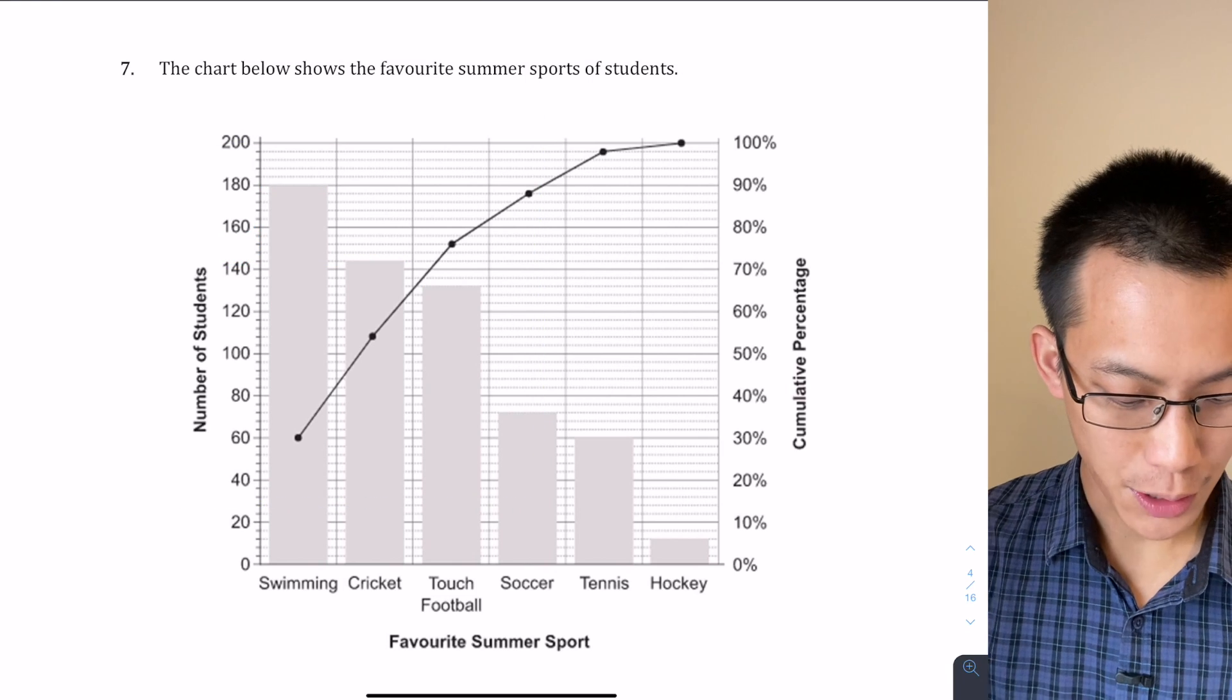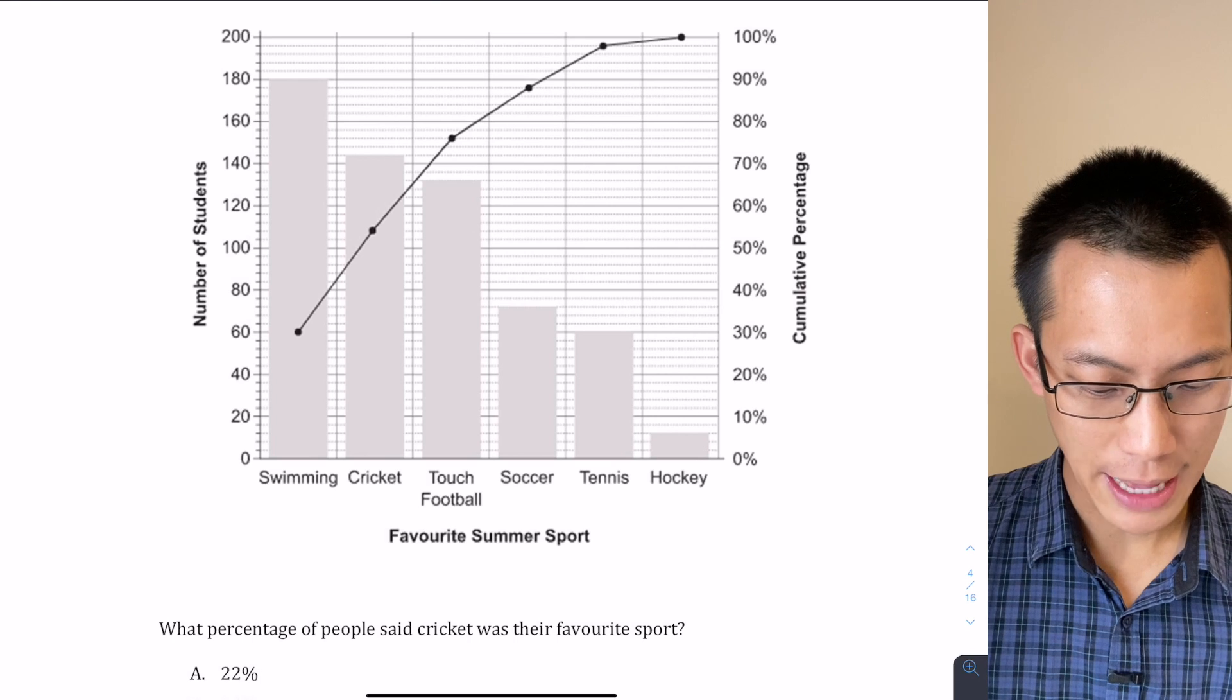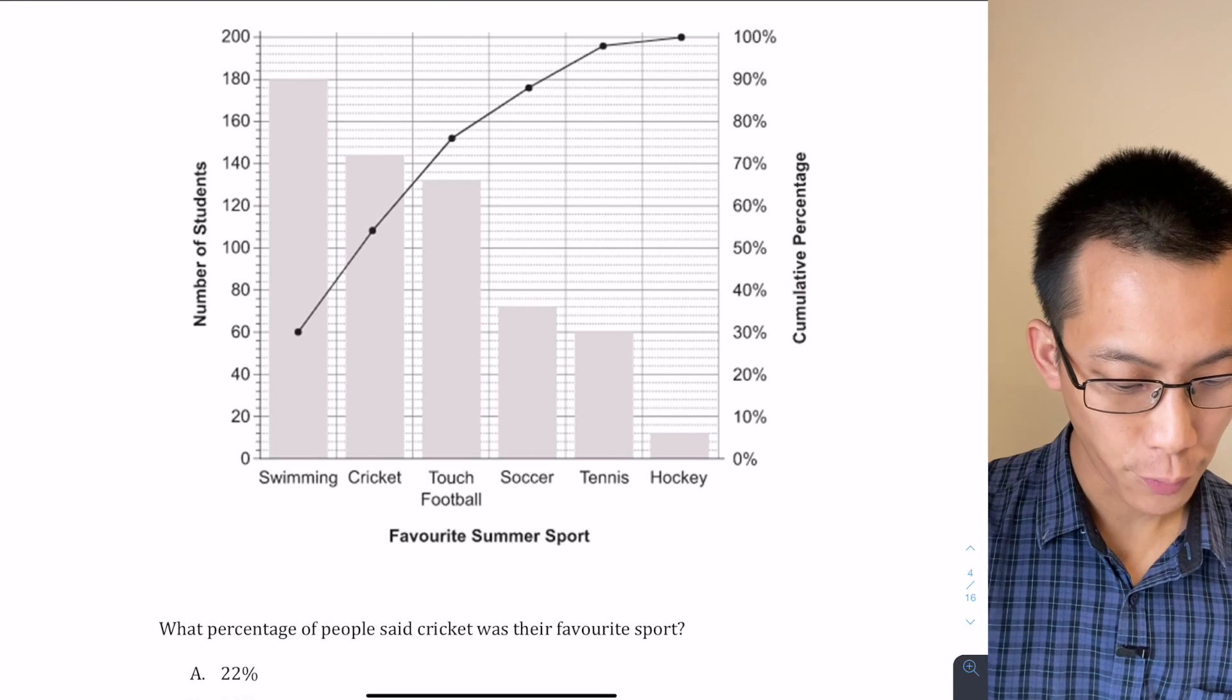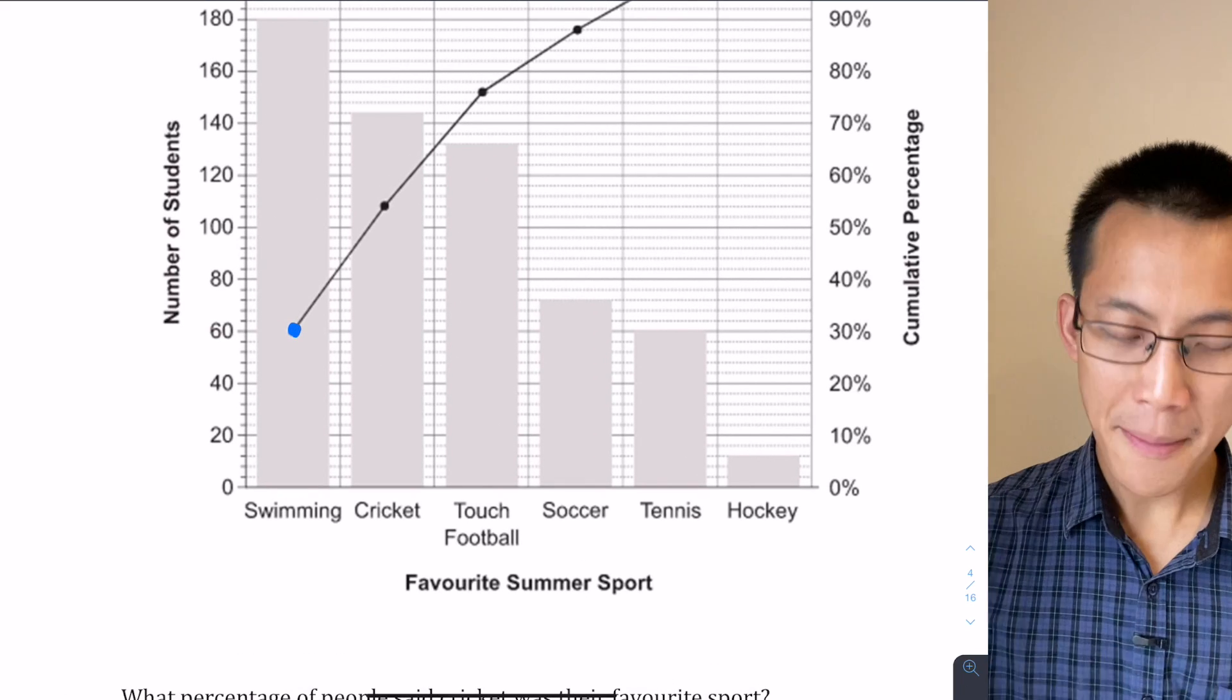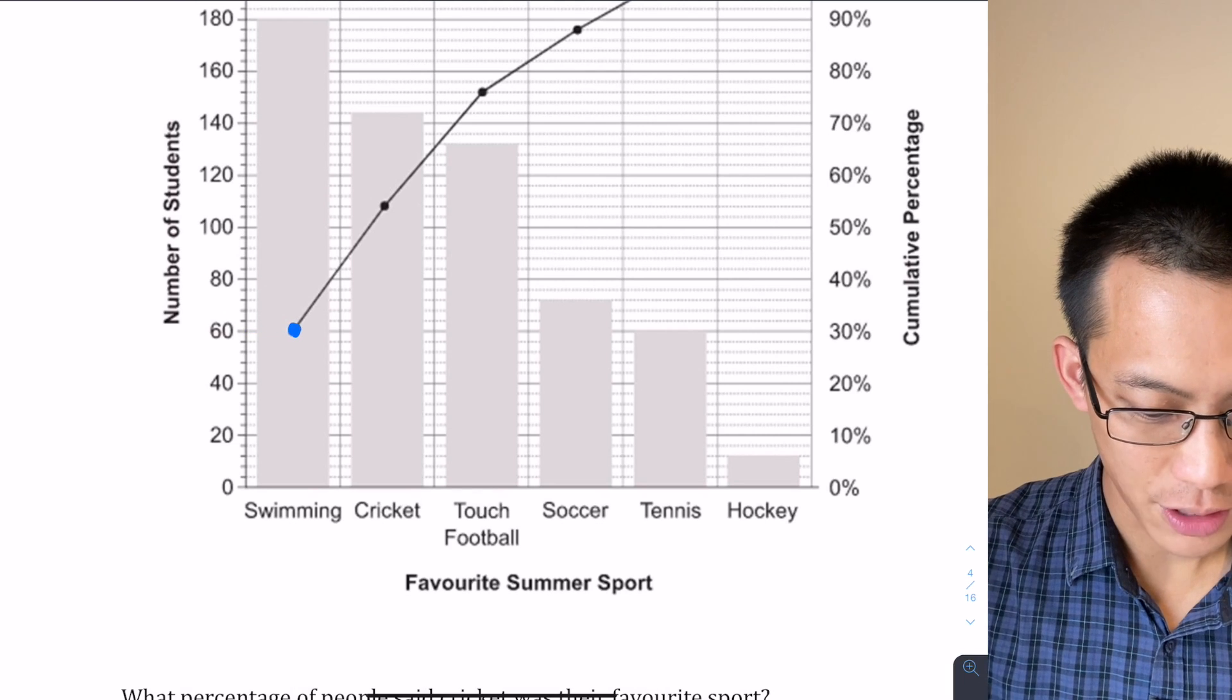So remembering that this line part of the graph, this black line that goes all the way through, is a cumulative percentage. So what that tells you, for example, if you have a look at this first data point here for swimming—60 is the number of students, but I should go over to the other side.